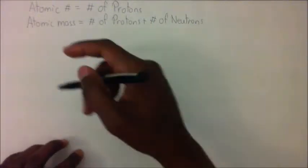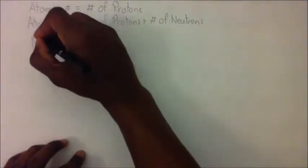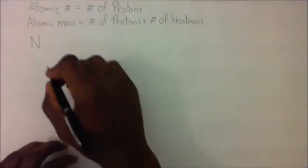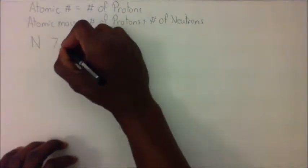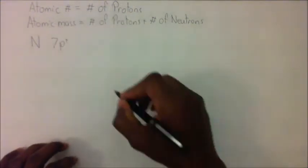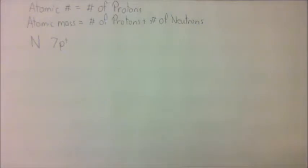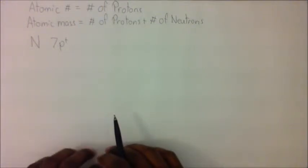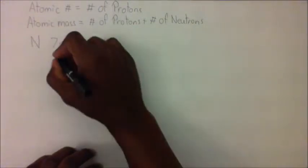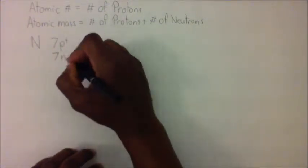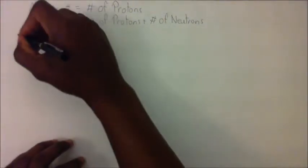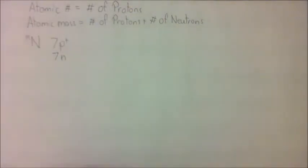So for example, if we have nitrogen, nitrogen has 7 protons, which means it has an atomic number of 7. And the most common isotope will have 7 neutrons, so it will have an atomic mass of 14.